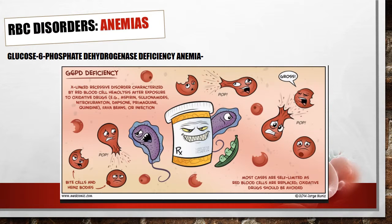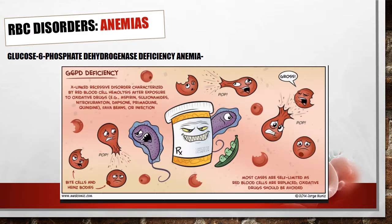Let's quickly review glucose-6-phosphate dehydrogenase deficiency anemia, or G6PD deficiency. More than 200 red blood cell-destroying anemias are present from birth as a result of defects or deficiencies in one or more enzymes in red blood cells. The most common type of inherited hemolytic anemia is G6PD deficiency, an X-linked recessive disorder characterized by red blood cell hemolysis after exposure to oxidative agents. Most cases are self-limiting, and those things that cause the reaction should be avoided.